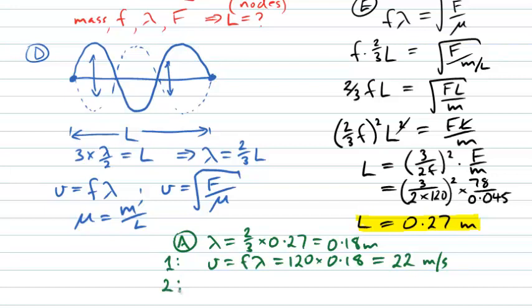And then to check that all is consistent with our problem, let's try calculating the speed using the square root of the tension divided by the mass per unit length. Again we know the tension here is 78 newtons. And I can now divide by the mass per unit length. The mass is 0.045 and the length is 0.27 meters. I need to take the square root of all of that, and when I do that calculation nicely enough I also get 22 meters per second.